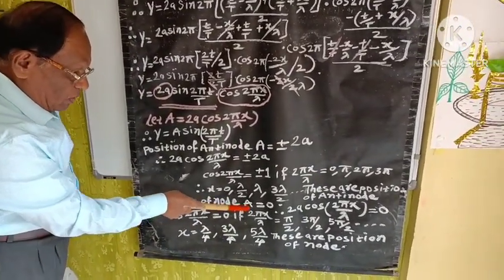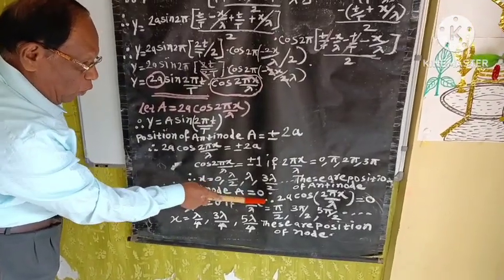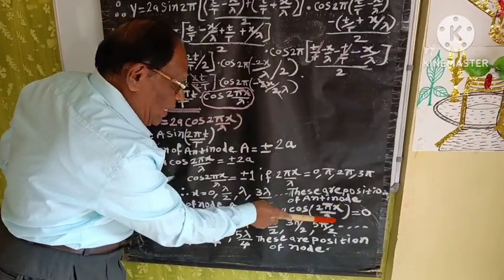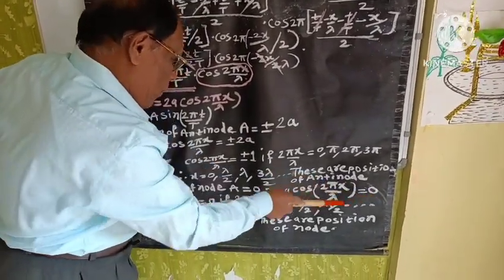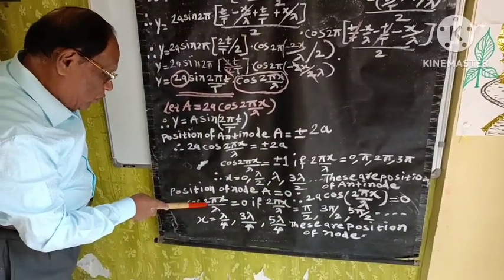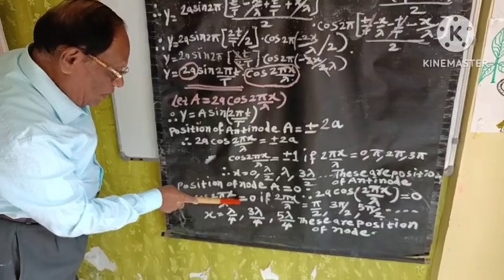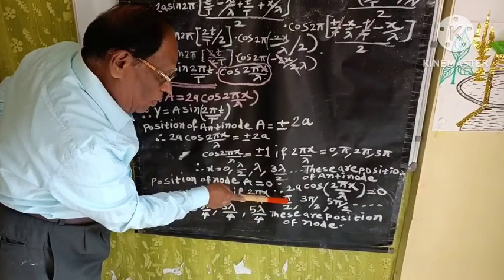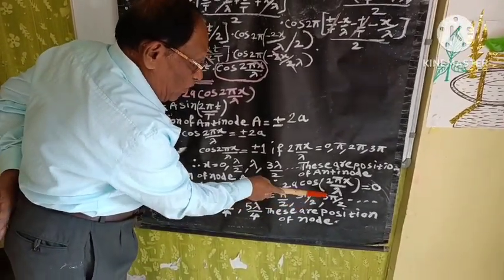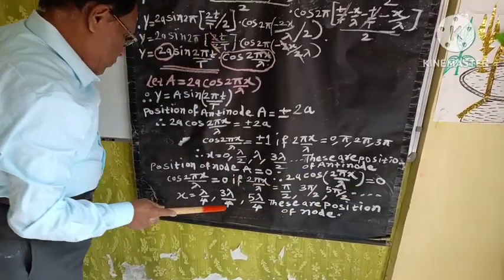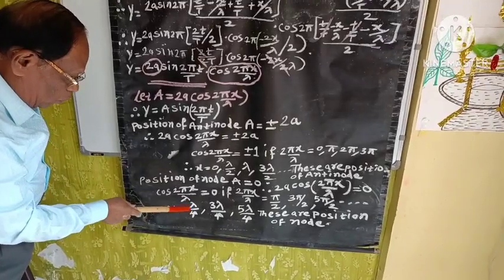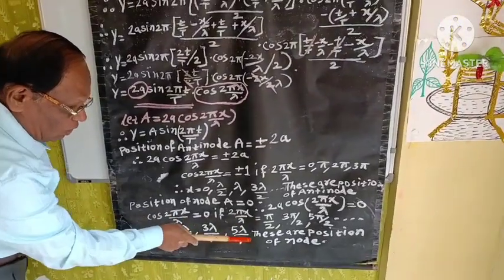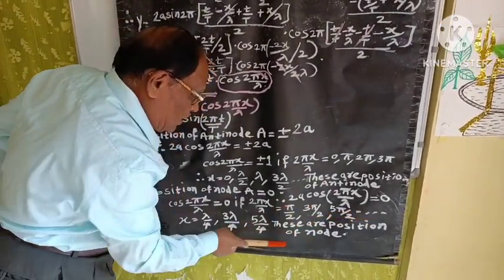Position of node: amplitude A = 0. Therefore, 2a cos (2πx/λ) = 0, which gives cos (2πx/λ) = 0. If 2πx/λ = π/2, 3π/2, 5π/2, and so on, then x = λ/4, 3λ/4, 5λ/4, and so on. These are the positions of nodes.